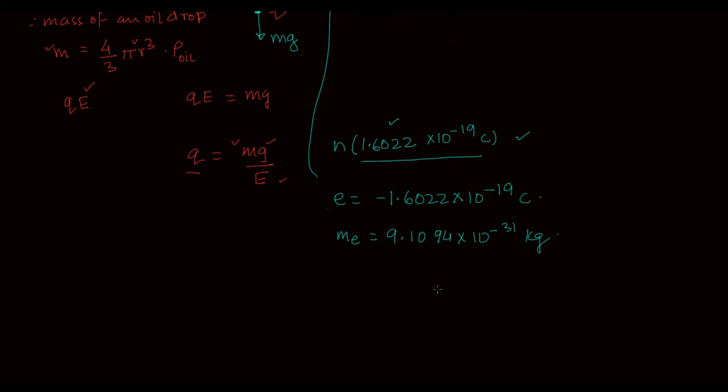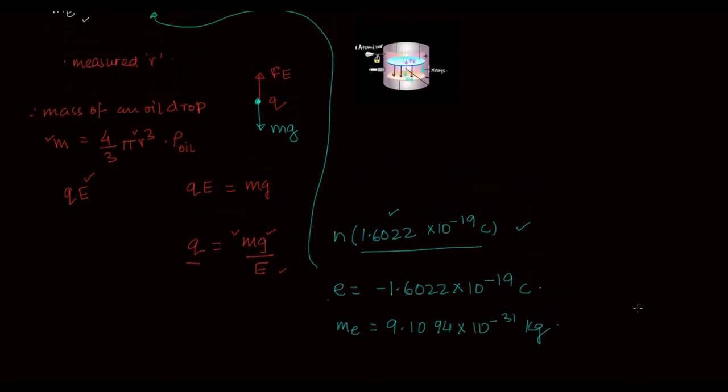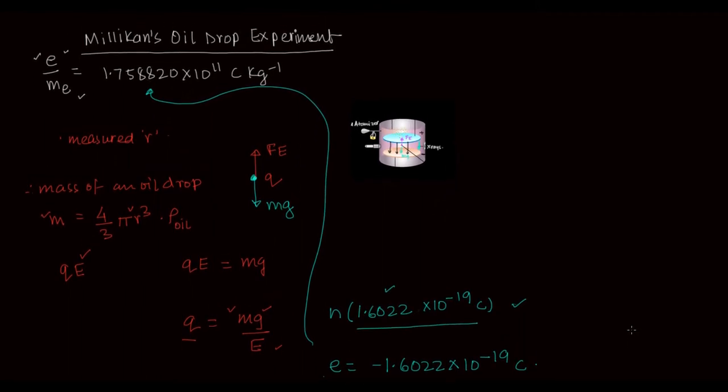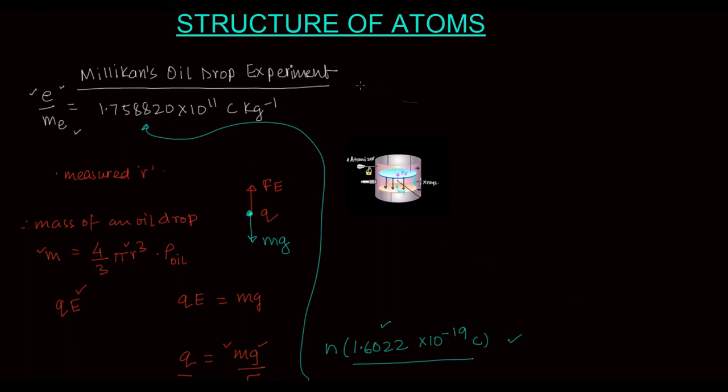For this remarkable experiment, Millikan was awarded the Nobel Prize, and he deserved every bit of it. Even though the experiment looks pretty elemental, just visualizing how he would do this, how he would induce charge, and how he would measure it took him about eight years of conception and fine-tuning. This is considered one of the most significant things to be known by human beings.